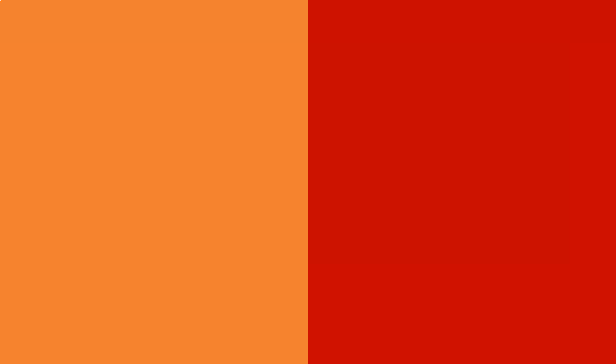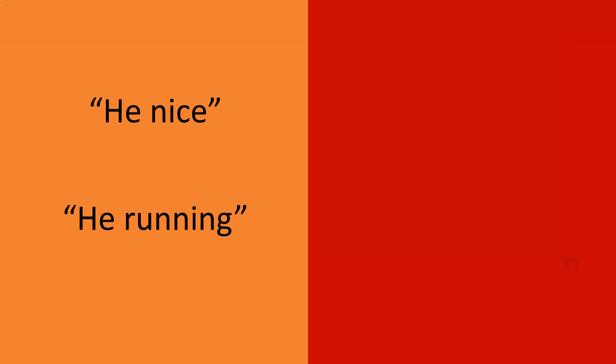In the same way, African American English has a unique set of words and a non-random set of grammatical constructions that might feel incorrect to a speaker of standard American English, but are correct within that dialect. For instance, a black person might say 'he nice' or 'he running,' but they would not say 'I nice' or 'I running,' because African American English isn't broken or filled with random mistakes. The grammatical constructions have, in fact, evolved in systematic ways over time.